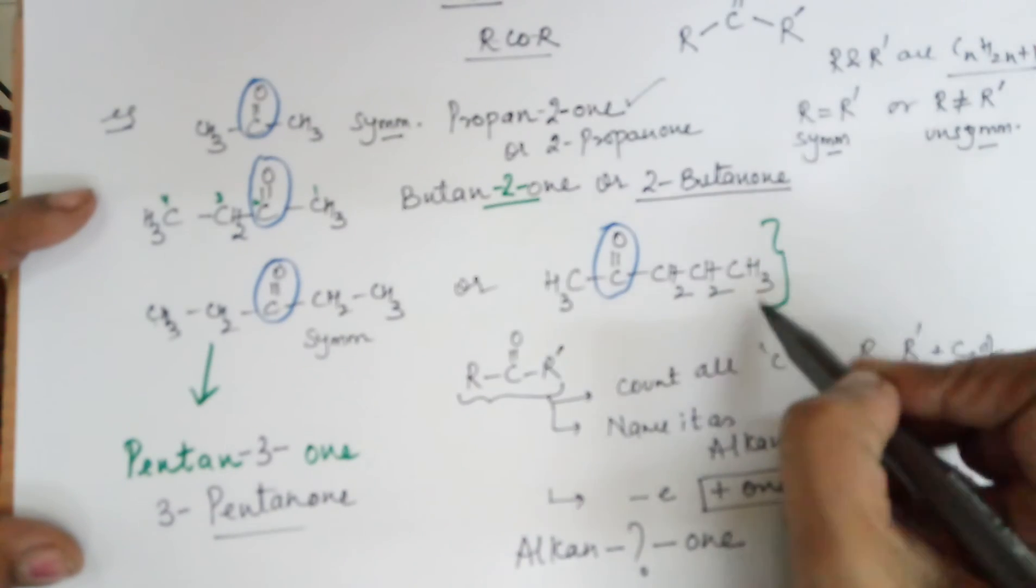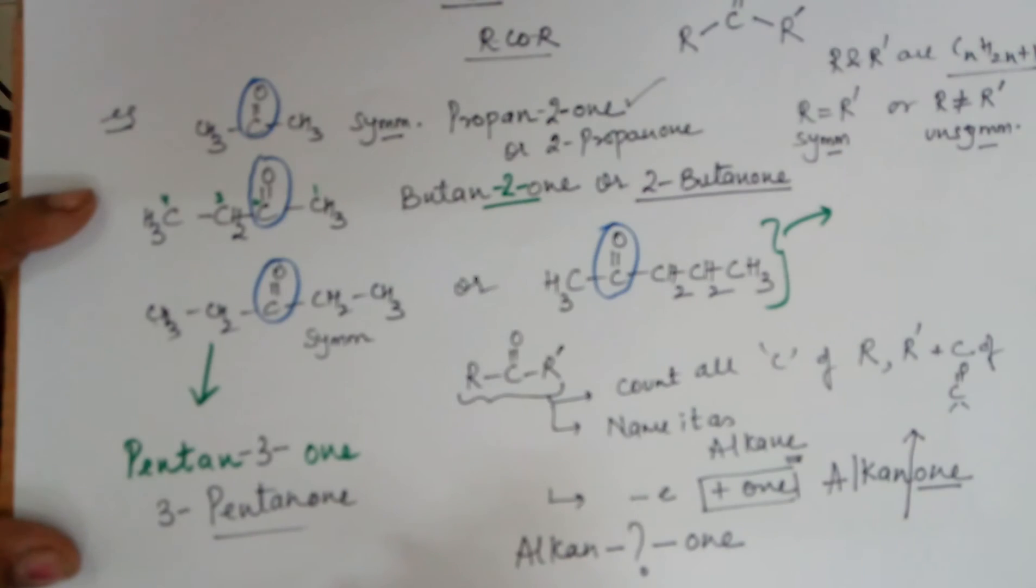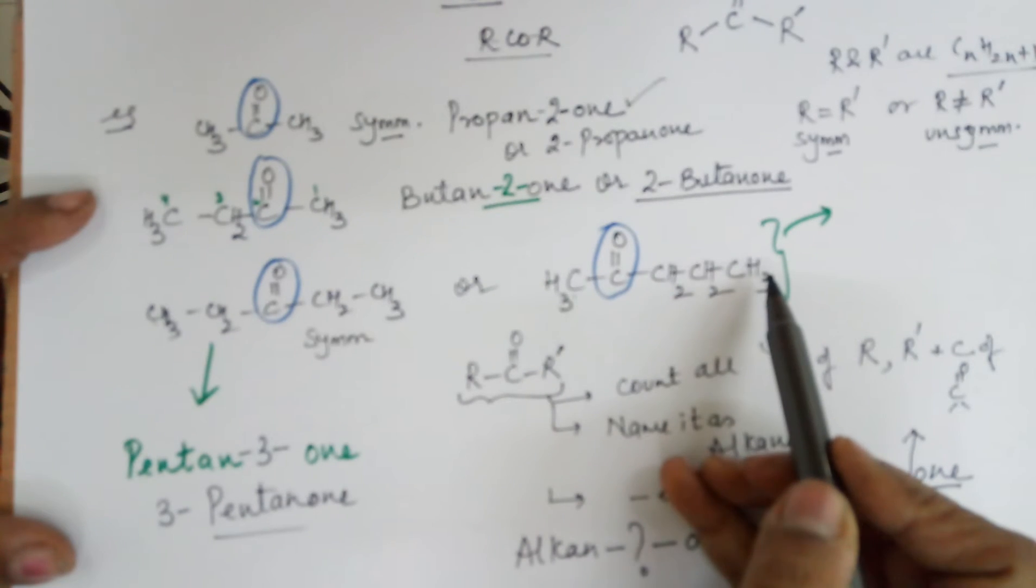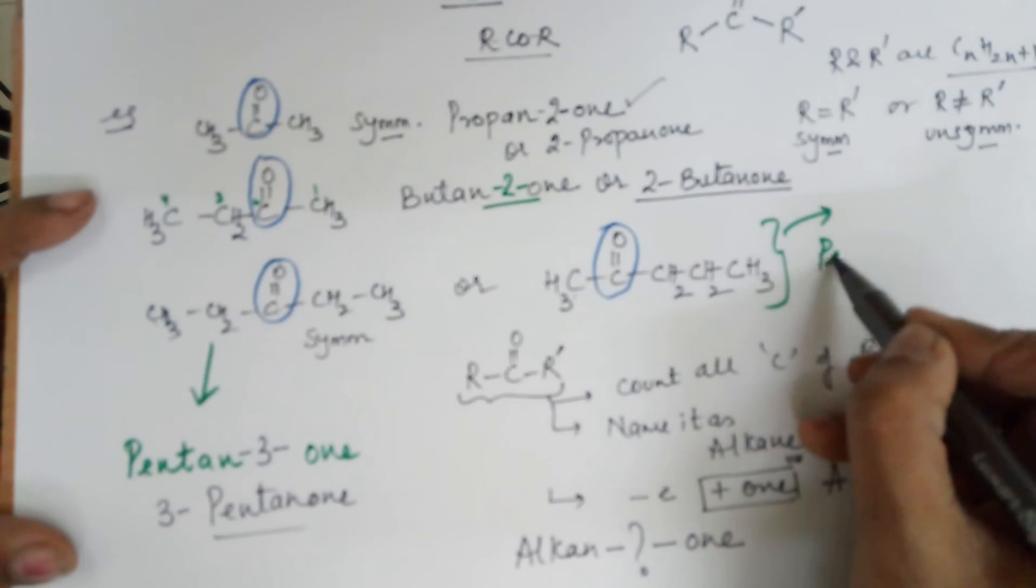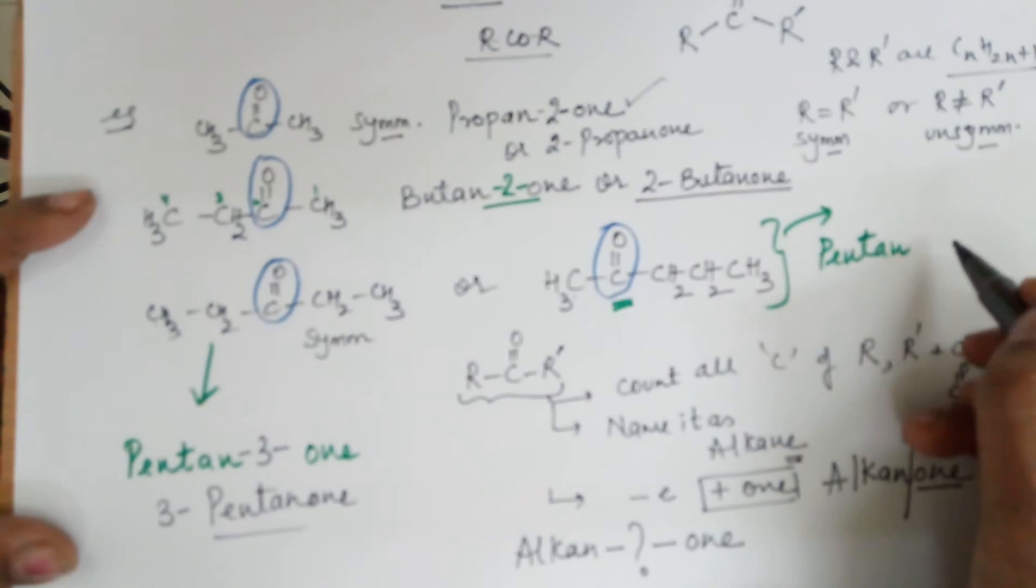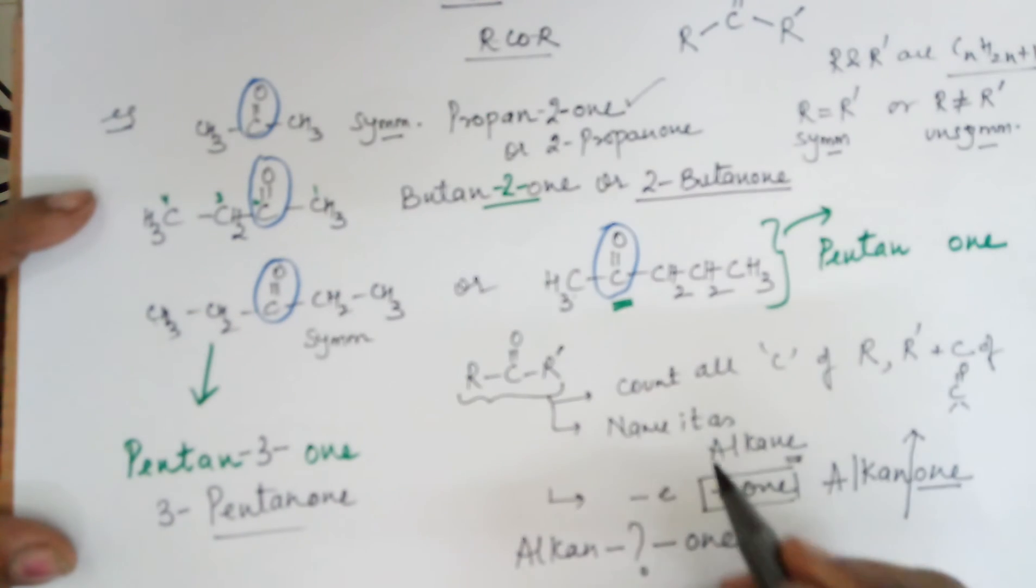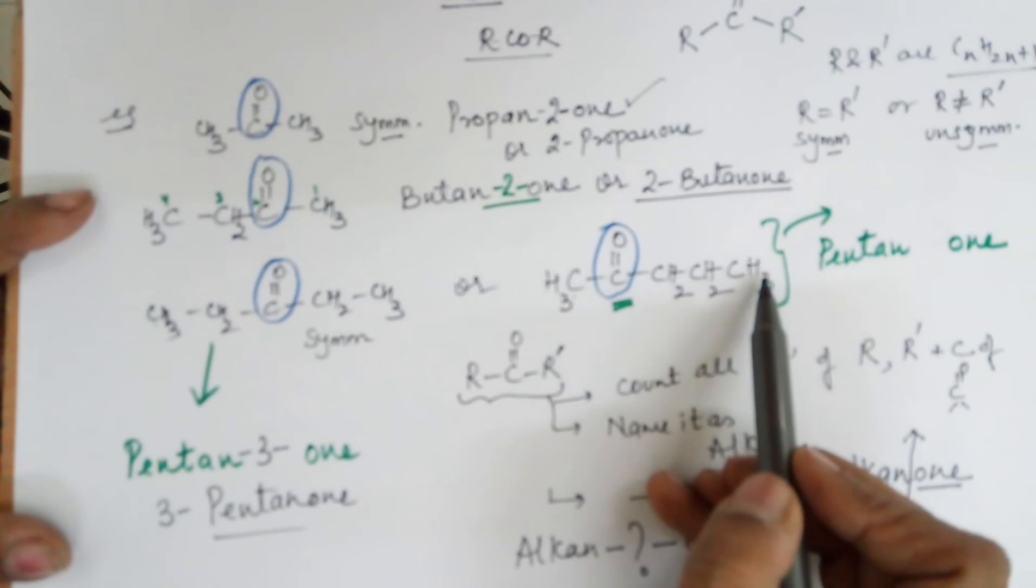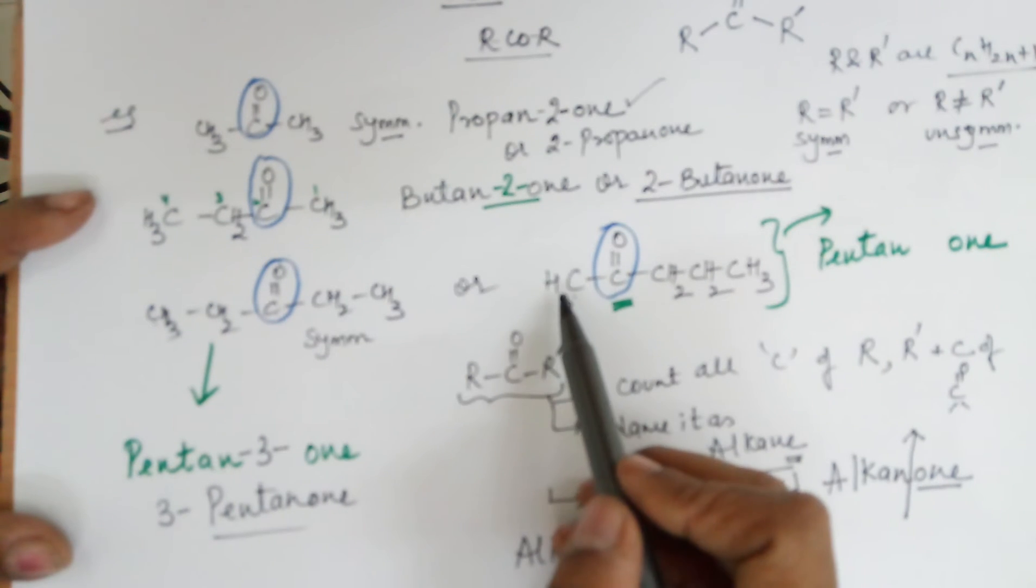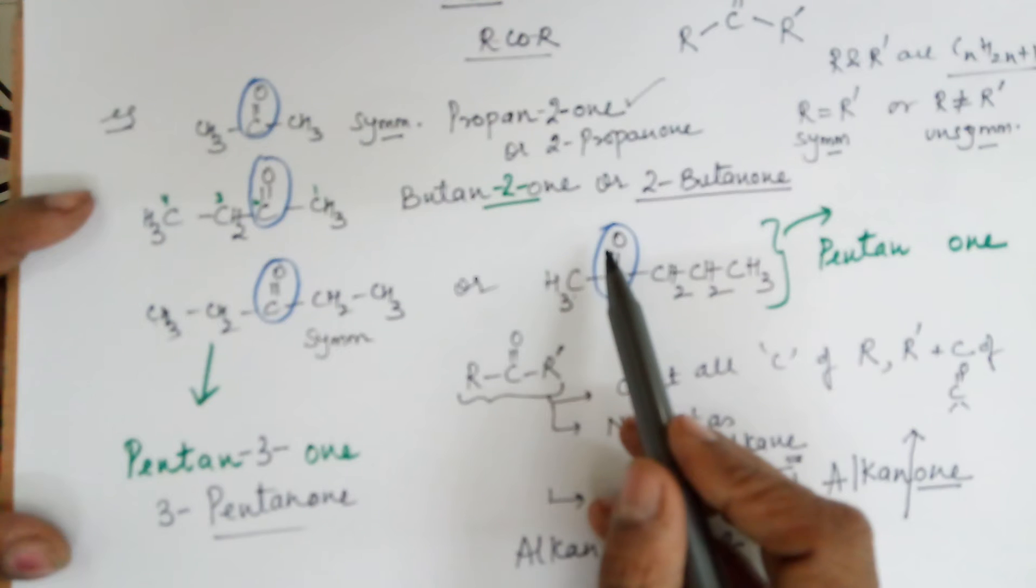Coming to the last example, which is this. How many carbons do we have? 1, 2, 3, 4 and 5 again. So the name is pentane. I need to add an O-N because of the ketonic group. I need to know the position. In this case, if I number it from the right, 1, 2, 3, 4 and then 5, I get the fourth position for the ketone. But if I number it from the left, 1, 2.